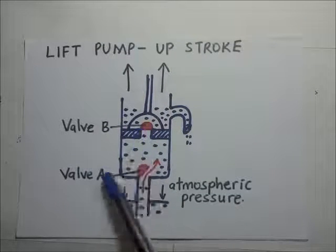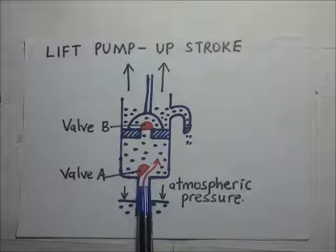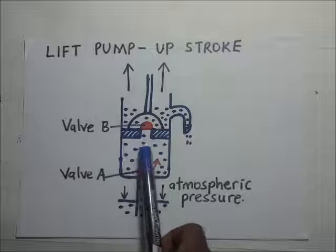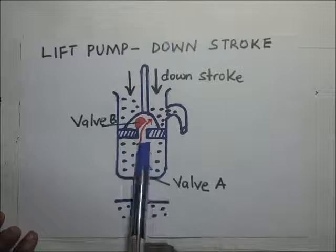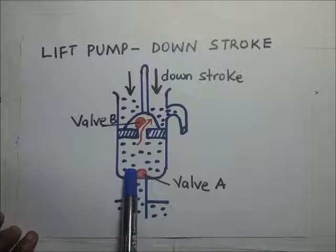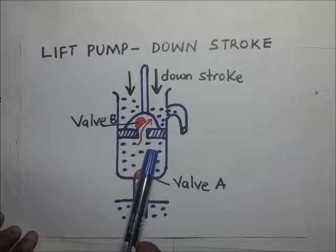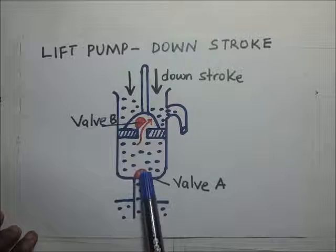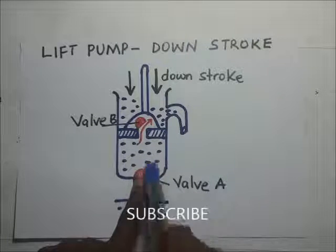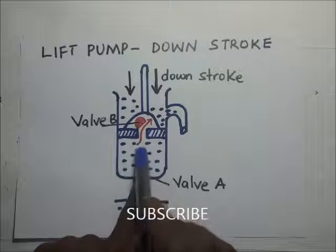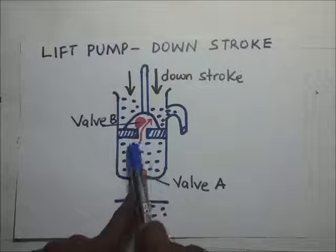Valve B drops back and closes, while valve A opens up because the atmospheric pressure below valve A is going to be greater than the pressure on top of valve A. During the downstroke of a lift pump, valve A will automatically drop and close as a result of the force on top of it. As this piston moves downwards, the water that has been trapped causes valve A to close, the pressure increases, and this causes valve B to open — making the water be pushed out.